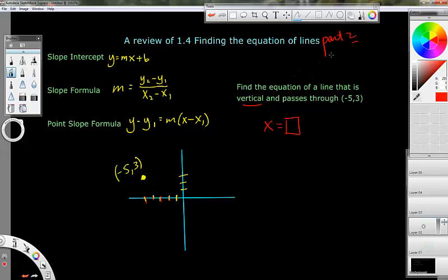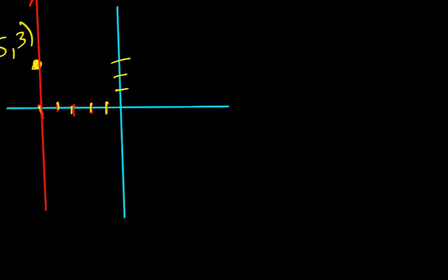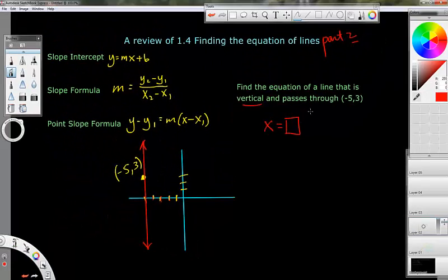That's my line that I want to find the equation of. Well, it's of the form of being vertical. So, it's X equals a number. So, in other words, what number do we put in this box right here?